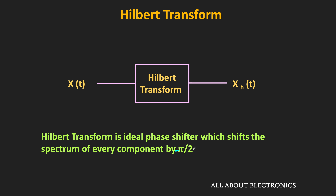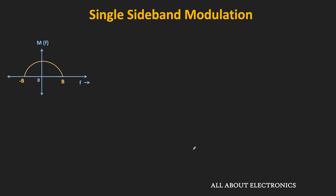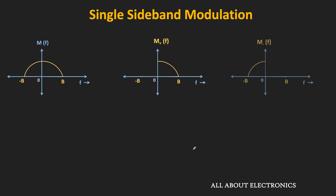With the help of the Hilbert transform, let us now find the mathematical expression of the SSB signal. Let m(t) be the message signal with frequency spectrum M(f). This M(f) consists of two parts: M+(f) — the positive side, and M−(f) — the negative side of M(f).